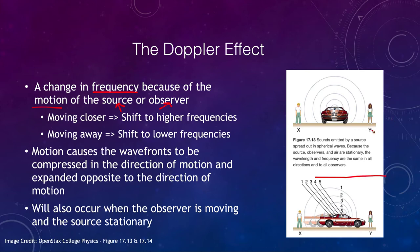For example, we have a stationary vehicle and two people standing by it. There is your vehicle that is stationary, and if it has a siren or a horn blaring, then both people are going to hear the exact same frequency. That's because the sound waves move out in spherical form and take just as long to reach either side, so they're not going to be compressed or expanded.